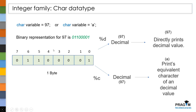When we use %d as a format specifier in printf, printf will convert this binary value back to the decimal value and directly print the decimal value onto the screen. Whereas if you use %c as a format specifier, printf will convert this binary value to a decimal value and check the equivalent ASCII character of this decimal value.